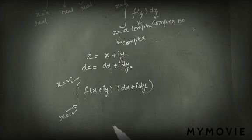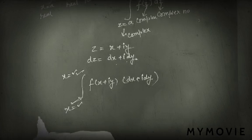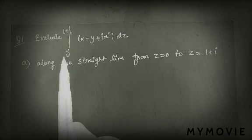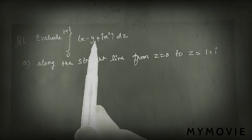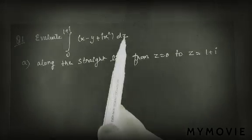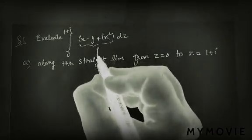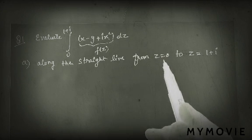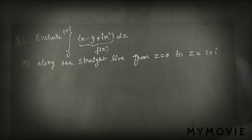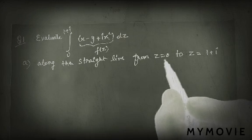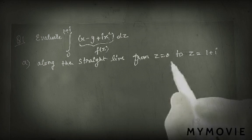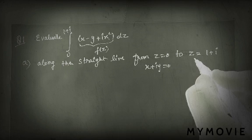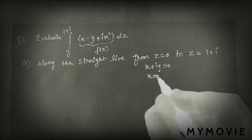This is easy to understand with an example. Let us consider: evaluate the integration from 0 to 1+i of (x − y + ix²) dz, along the straight line from z equals 0 to z equals 1+i. First, let's talk about z equals 0 to z equals 1+i — how do we draw this? Z equals 0 means x plus i·y equals 0, so x equals 0 and y equals 0.